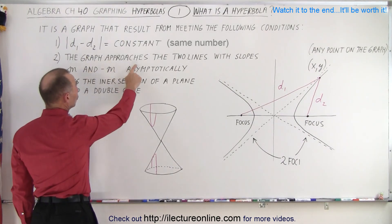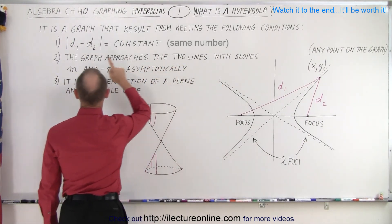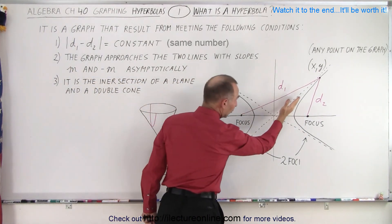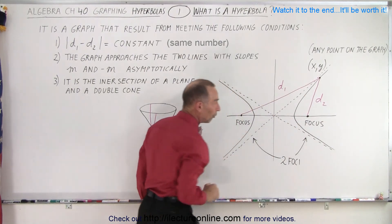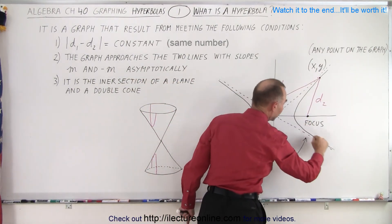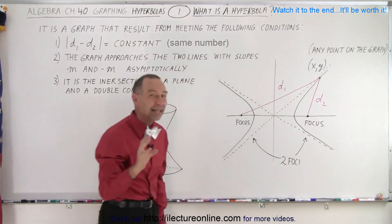Secondly, the graph approaches the two lines with the slopes that are m and negative m. So in other words, whatever the slope is here, if it's a slope equal to one, then this is negative one, two, negative two, and so forth. You can see that the parabola will approach those two lines asymptotically, but never touch them.